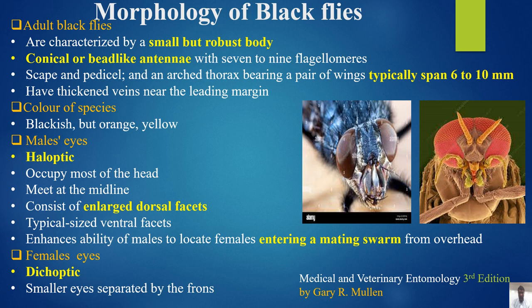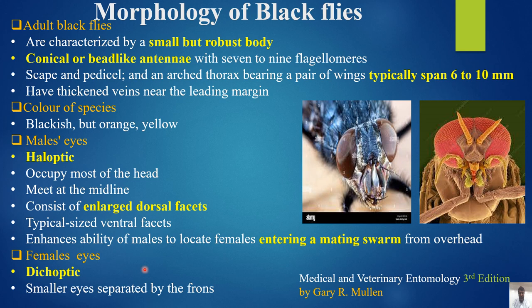Adult black flies bear a pair of wings typically spanning 6 to 10 mm, with thickened veins near the leading margin. Color is generally blackish but can be orange-yellow in some species. Males have holoptic eyes that occupy most of the head and meet at the midline, consisting of enlarged dorsal facets and typical-sized ventral facets, which enhance the males' ability to locate females entering a mating swarm. Female eyes are dichoptic — smaller and separated by the frons.